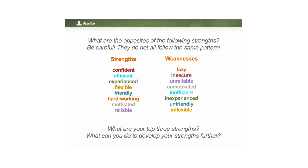Now let's practice looking at strengths and weaknesses simultaneously — let's look at the opposites of each strength as a weakness. What are the opposites of the following strengths? Be careful: they do not all follow the same pattern. Let's start with 'confident' — what do you think is the opposite? Yes, Star: confident and insecure. Well done. How about 'efficient'? Yes, Sahar. Well done. What about 'experienced'? Yes, Star — of course, inexperienced. Flexible? Yes, Elena: the opposite is inflexible. Well done.